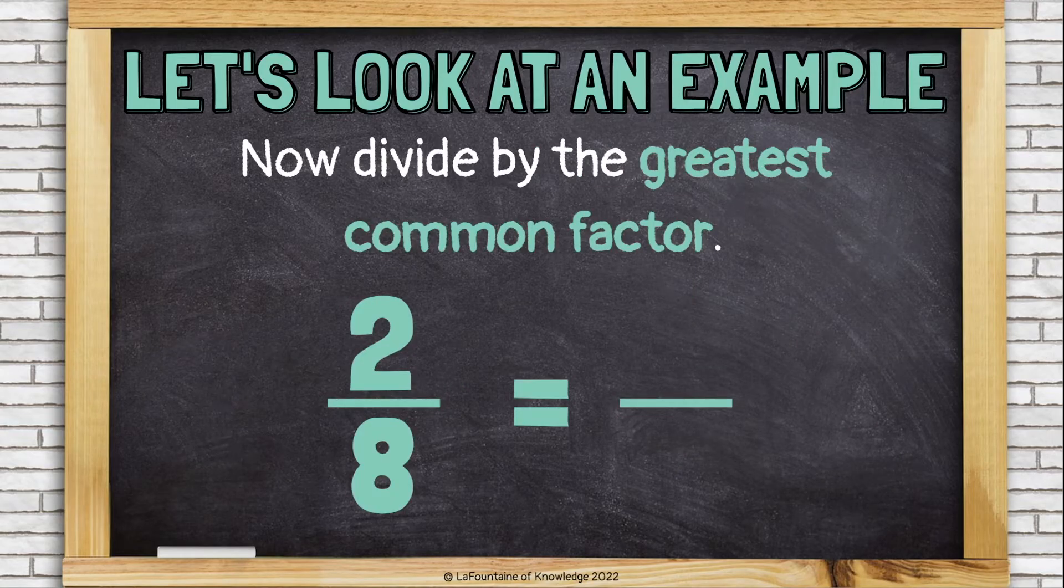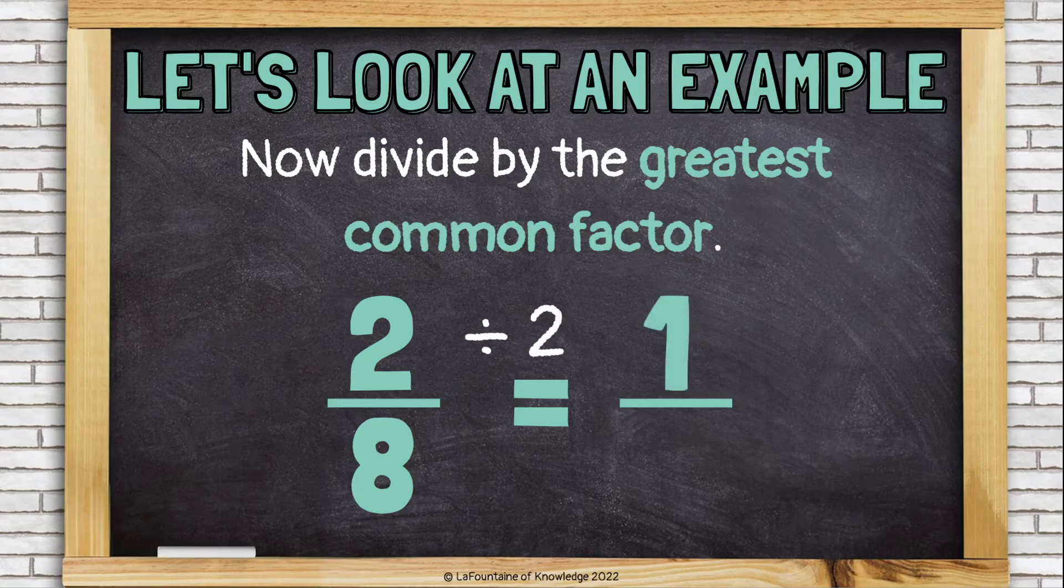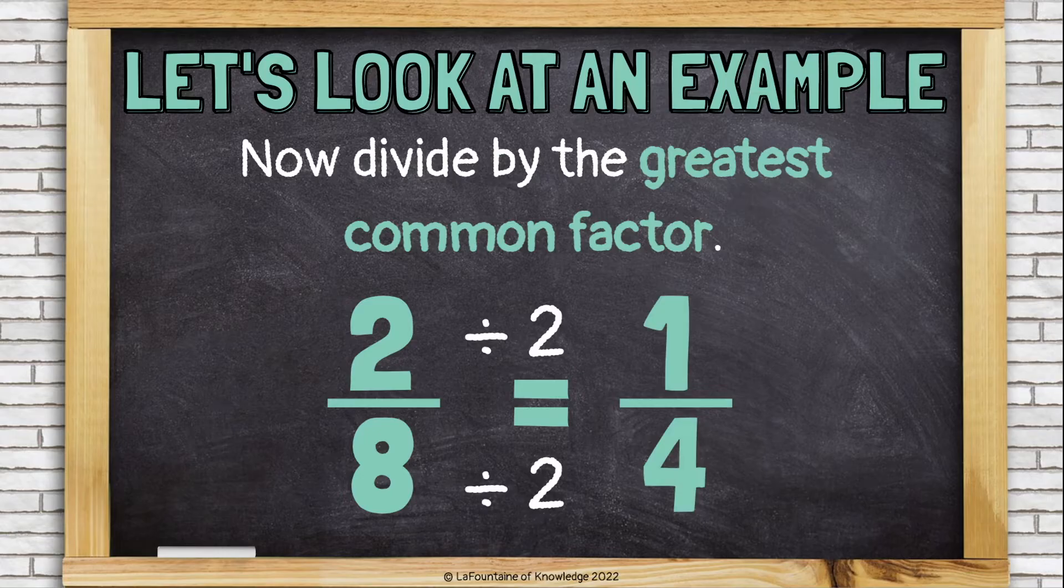Now, we divide by the greatest common factor. So, two divided by two is one. And eight divided by two is four. Now, we can see that two-eighths is equivalent to one-fourth.